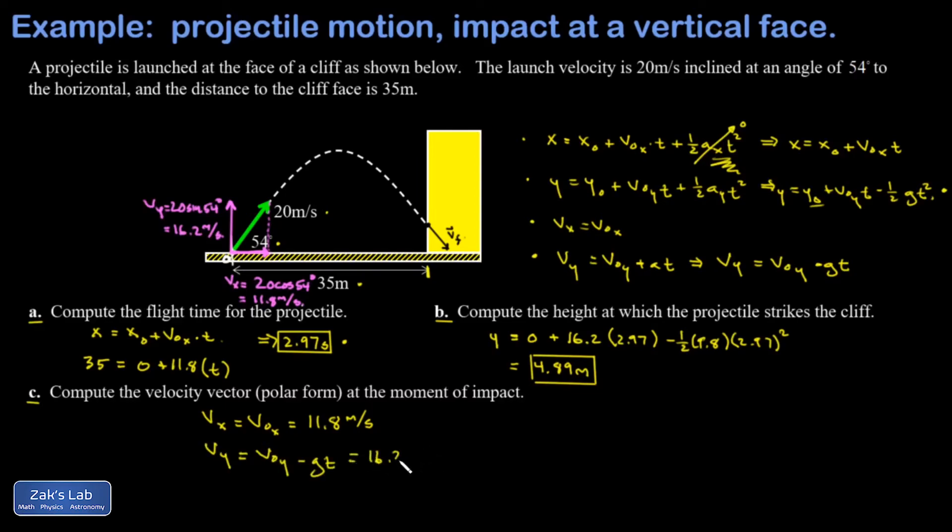I start with my initial y velocity of 16.2 meters per second and go minus 9.8 times the amount of time the flight's been going on for, which is 2.97 seconds. This gives me a y velocity of negative 12.9 meters per second. This is the moment we realize the projectile impacts the face of the cliff on the way down. I know I drew it that way in the picture from the beginning, but you can never really trust a picture until you run the numbers on it. Negative y component for the velocity means it's on the way down when it hits that cliff face rather than on the way up.